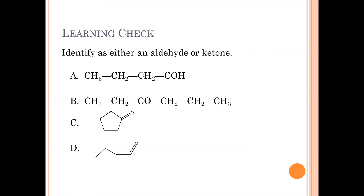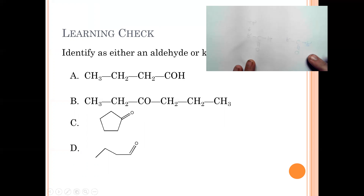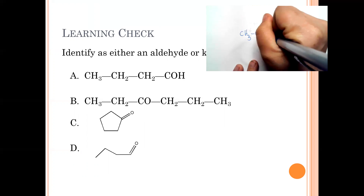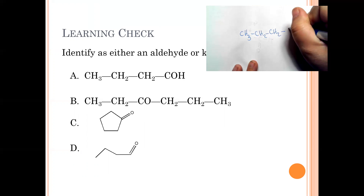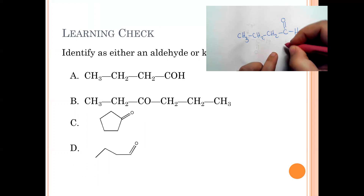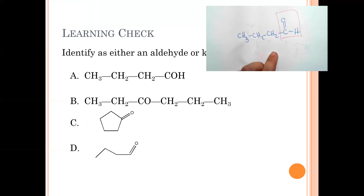When identifying these, if we see a COH — condensed notation instead of showing the double bond — that's the same as drawing a carbonyl carbon with a double bond O and an H. Anytime you see COH, that's an aldehyde. So example A, because it has that COH group, is an aldehyde.